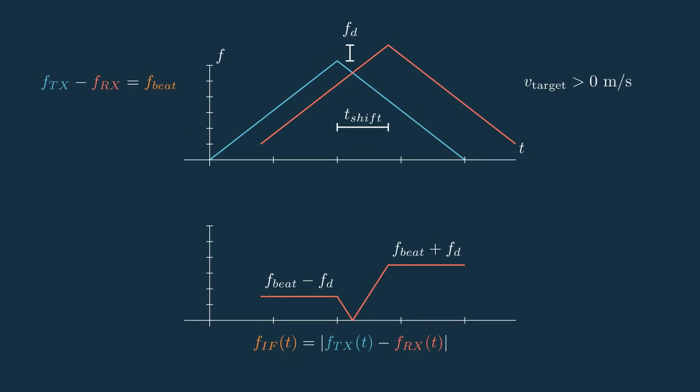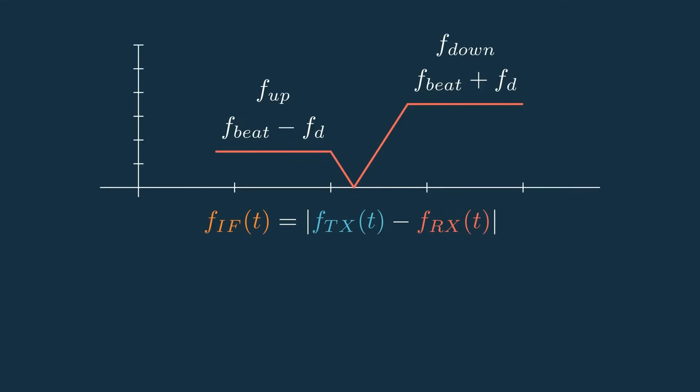We'll call these two frequency differences fup and fdown, because the up section is ramping up and the down section is ramping down. If we were instead back doing the sawtooth modulation technique, we wouldn't get this fdown information at all. So this is really cool, because where we previously had two unknowns and only one known frequency shift, now we have two values to compute the two unknowns.